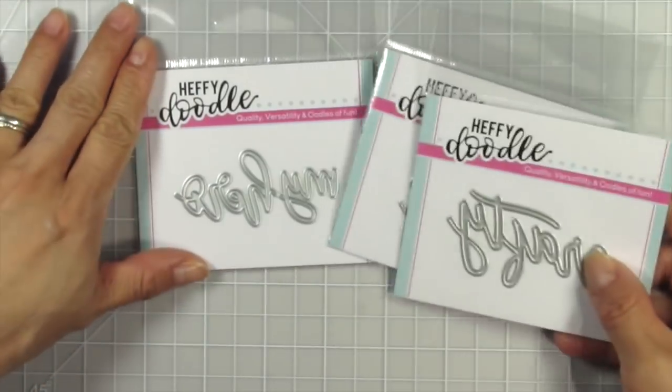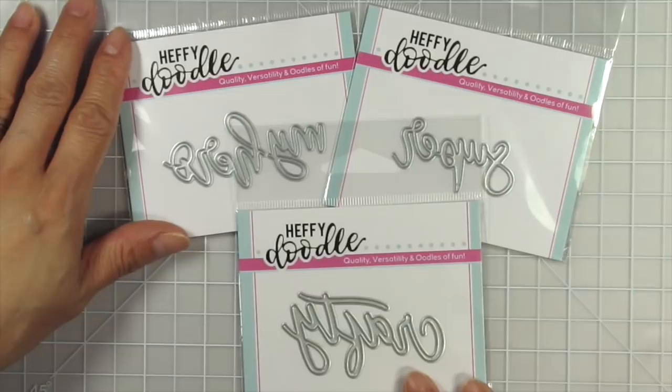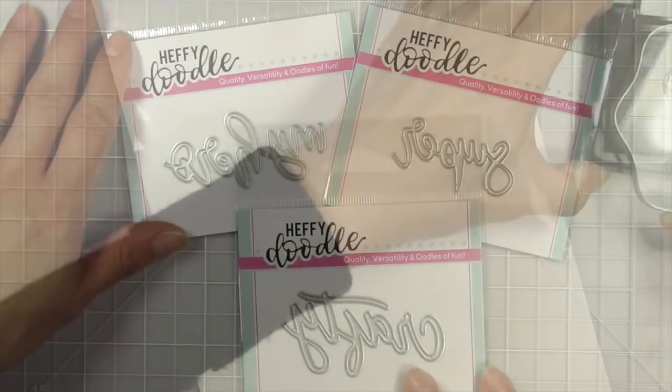In my order, I threw in these extra word dies, which read My Hero, Super, and Crafty. Originally, I was going to incorporate them all in one card, but I went with different designs, so I only used two of the three.